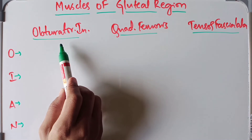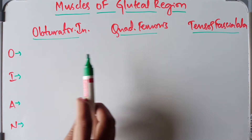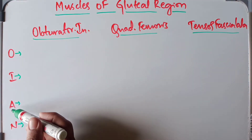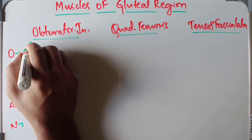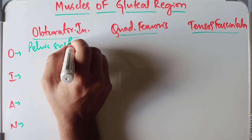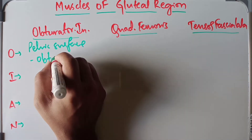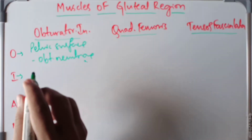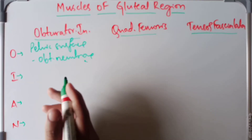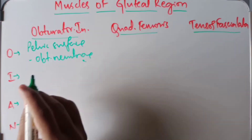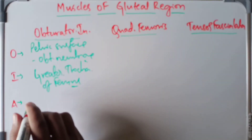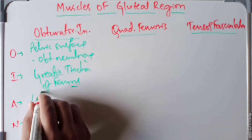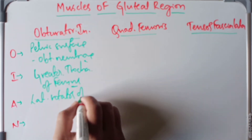Now the remaining three muscles of the gluteal region: obturator internus, quadratus femoris, and tensor fasciae latae. Beginning with the obturator internus — it arises from the pelvic surface of the obturator membrane. It is inserted into the medial surface of the greater trochanter of the femur. Its action is lateral rotation of the hip joint.